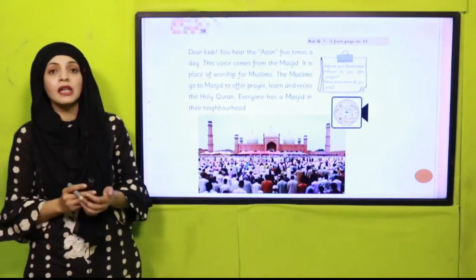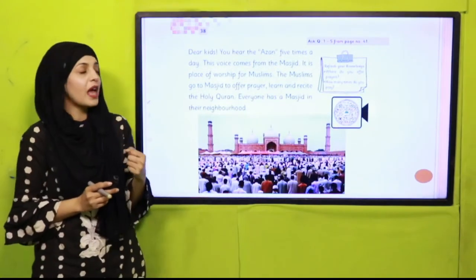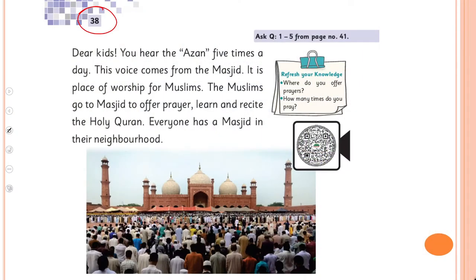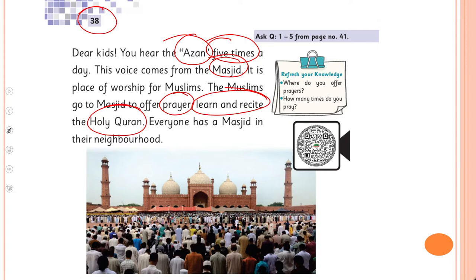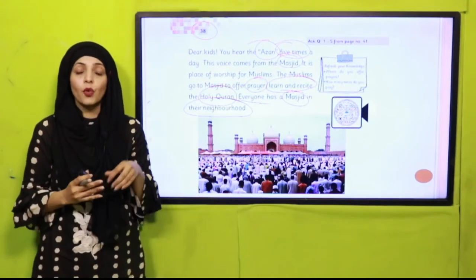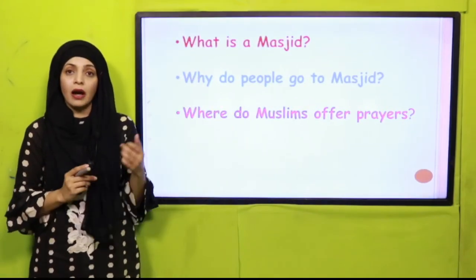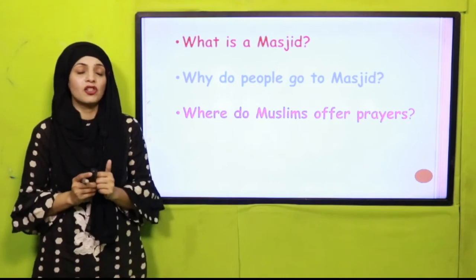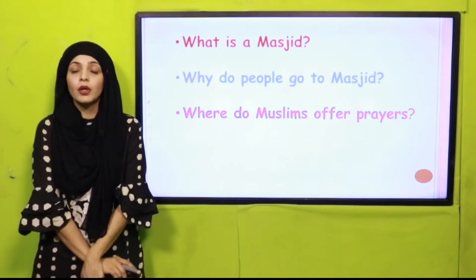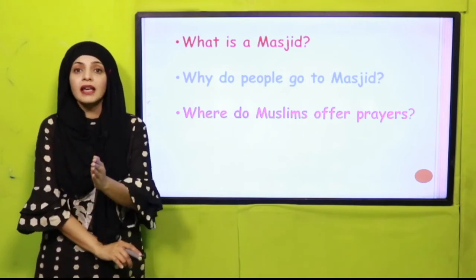Let's quickly move towards our reading pages and revise what we have done. On page number 38, we discussed that the place for Muslims to worship is a masjid. There is azan that happens in the masjid five times a day. Muslims go to masjid to offer prayer, and to learn and recite the Holy Quran, and everyone has a masjid in their neighborhood. This was the recap and review of page number 38. Now quickly answer: what is a masjid?